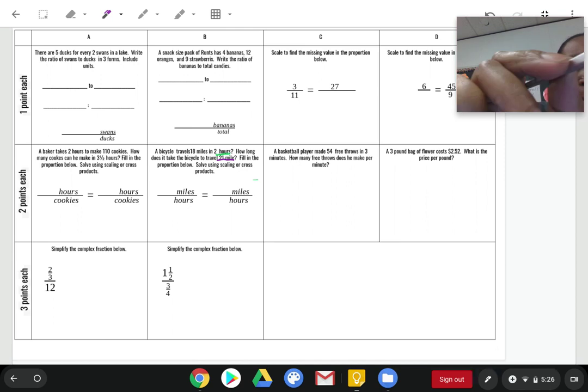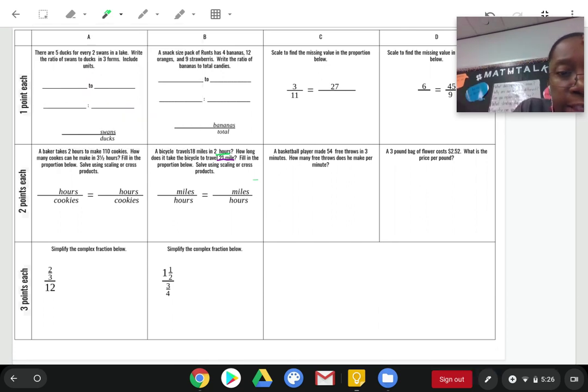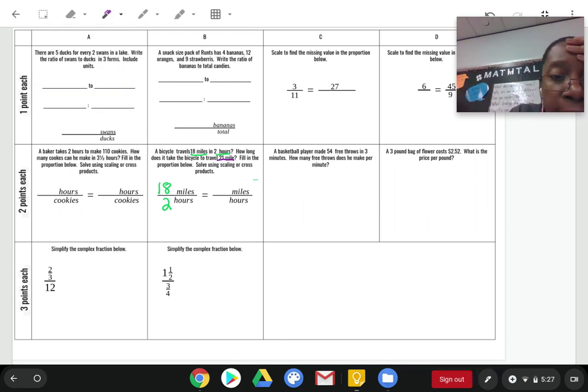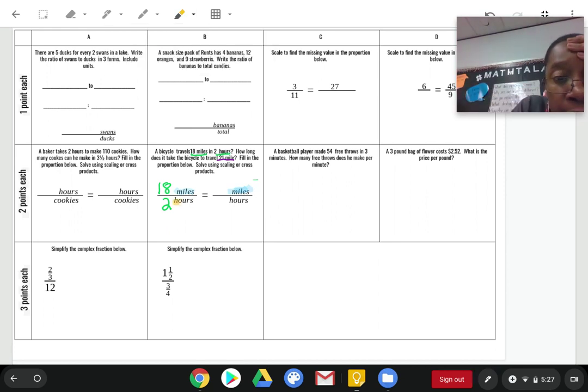So, I'm going to go ahead and fill things in. I need you to remember that this 18 miles and that 2 hours go hand in hand. Okay. That's why I'm putting them on the same side. That 18 miles corresponds to the 2 hours. And then, on the other side, they ask, how long does it take the bike to go 21 miles? And, remember, I told you we had to line up our units. Notice up top, I have miles lined up with miles. That's important. And, then, on the bottom, I have hours lined up with hours.